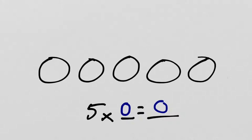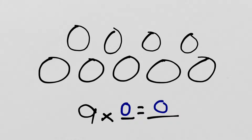What if I changed it? What if I made more groups? I added on four more groups. So, now instead of 5 times 0, it would be 9 times 0. But, are there any dots in any of them? No. So, 9 times 0 is still 0.